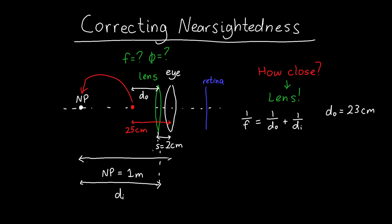And our image distance is the near point minus the distance between the lens and the eye. So it's this distance. And so that's 1 meter minus 2 centimeters. So 0.98 meters. But because the image is to the left of the lens, when we sort of normally expect images to appear to the right, this is a virtual image. And so the image distance is negative, so this is negative 98 centimeters.